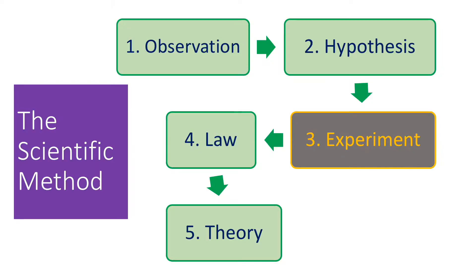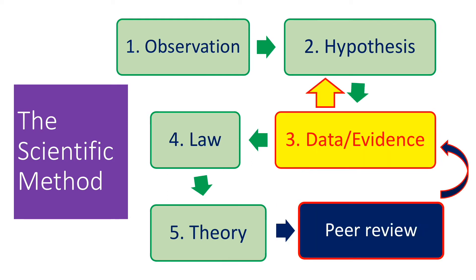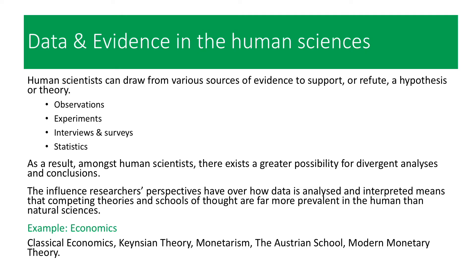In terms of the methodology employed to produce the knowledge claims and theories in these subject areas, the human sciences really follow a process that is the same as the natural sciences. Here we have a diagram of the classic scientific methodology. In this slide, you will see that I've replaced the third stage of the natural science methodology — the experiment stage — with data/evidence. The reason for this is that human scientists have the opportunity to draw data and evidence from multiple different sources.